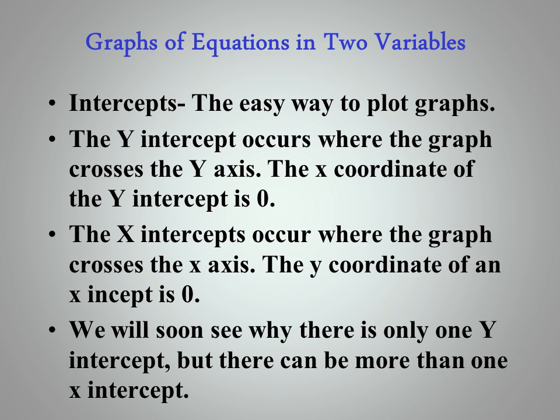Intercepts are the easy way to plot graphs. The Y-intercept occurs where the graph crosses the Y-axis. The X-coordinate of the Y-intercept is, therefore, 0. The X-intercepts occur where the graph crosses the X-axis. Here, the Y-coordinate of an X-intercept is 0. We will soon see why there is only one Y-intercept, but there can be more than one X-intercept.